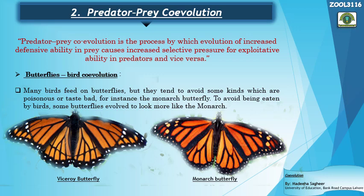From this definition, we can conclude that this kind of co-evolution leads to changes in the prey that make it more defensive, and in response it leads to changes in the predator that make it more exploitative or stronger in its predating abilities. This process continues and works vice versa as well. Let's take the example of butterfly and bird co-evolution.